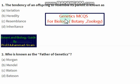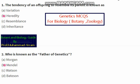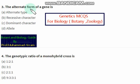Hi everyone. We are going to discuss important MCQs of genetics, equally important for biology, botany, and zoology. The tendency of an offspring to resemble its parents is known as — variation, heredity, resemblance, or inheritance? The right option is heredity. Who is the father of genetics? The father of genetics is Mendel.